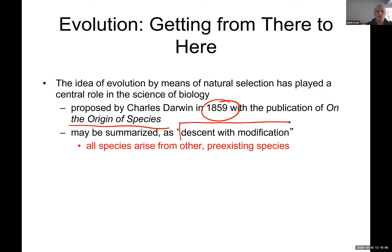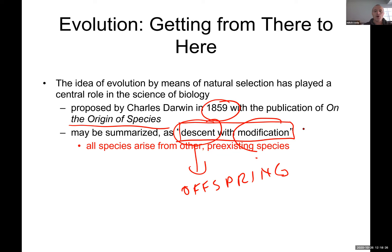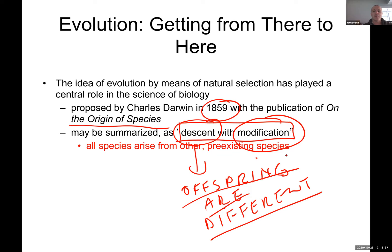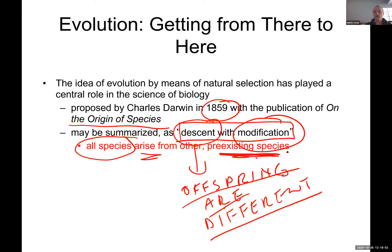His theory was published in 'On the Origin of Species' in 1859 and can be summarized as 'descent with modification' or 'survival of the fittest.' Descent means your descendants are your offspring, and those offspring are modified — different from us — because they are more adapted to survive. Also, all species arise from a pre-existing species. There's no such thing as a new species appearing out of nowhere — all new species evolved from a pre-existing species.